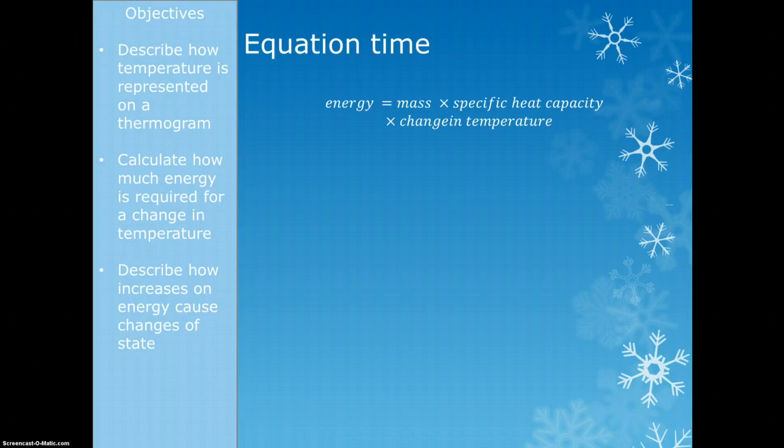times a magic number that's just called the specific heat capacity. It's just a specific property depending on the different material of the object. You'd always be given that, and then you multiply that by the change in temperature. So that's mass by specific heat capacity times change in temperature.